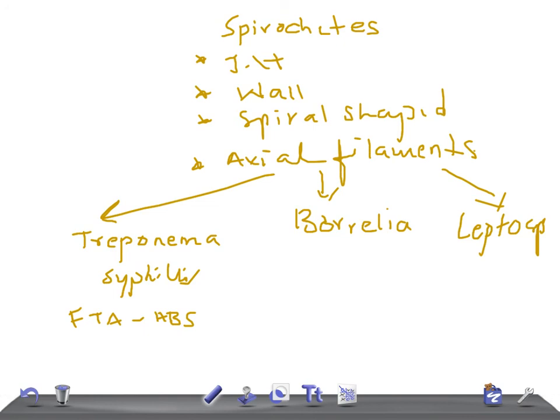The overall treatment for spirochetes is usually penicillin, but alternatives are used if the patient is sensitive. For Borrelia and Leptospira the same principle applies. Thank you so much for watching. Please subscribe and share our videos with your friends.